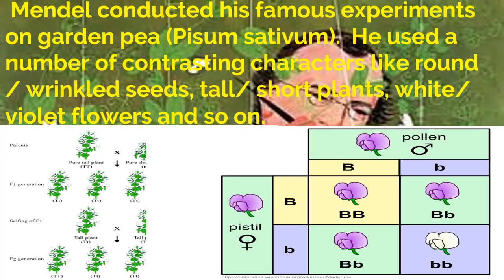Mendel conducted his famous experiments on Garden Pea, Pisum sativum. He used a number of contrasting characters like round or wrinkled seeds, tall or short plants, and white or violet flowers and so on.